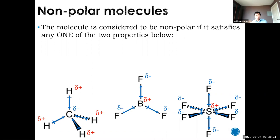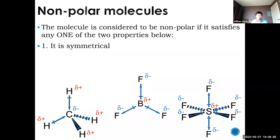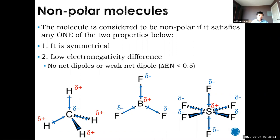How do you tell whether a molecule is polar or not? There are two questions you ask. A molecule will be nonpolar if it satisfies just one of two conditions. The first condition is symmetry — if you're symmetrical, you're nonpolar; you don't even need to check the other condition. The second condition is a low electronegativity difference: if the delta EN is less than 0.5, the dipole is so weak it doesn't make a real difference.